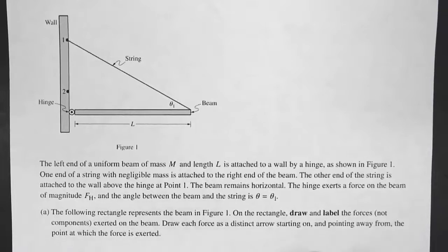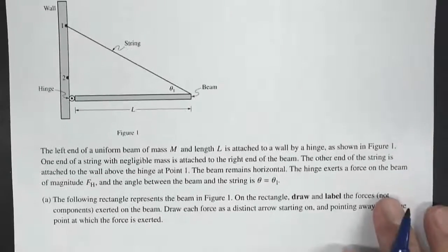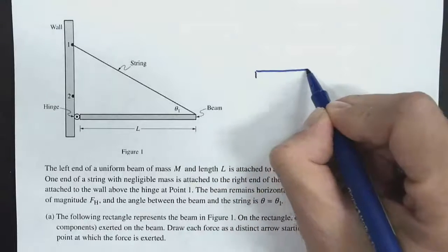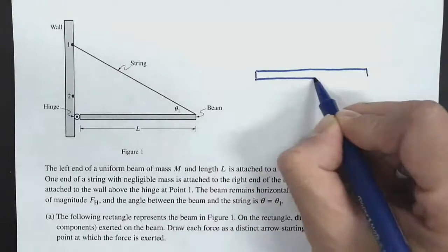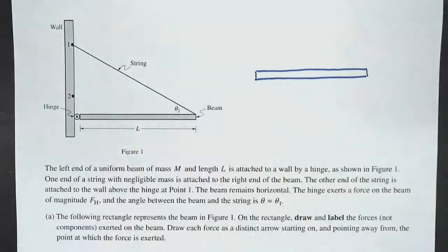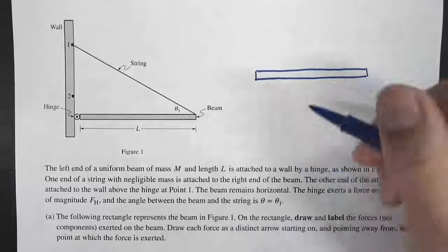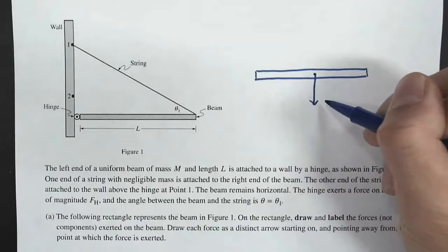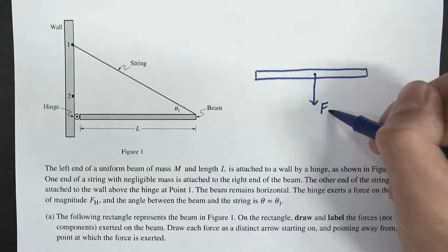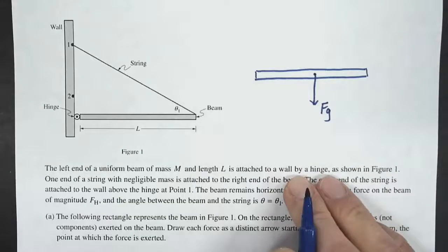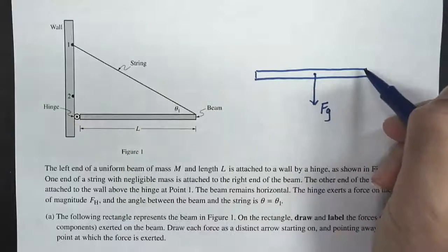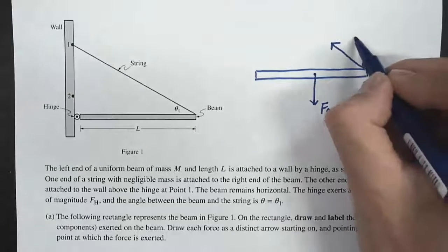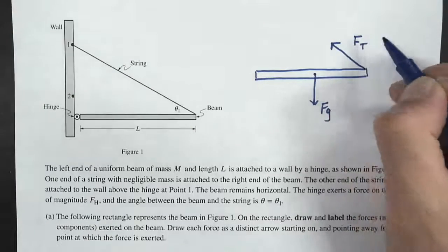So we have this beam, and I'm going to draw it up here so you can see. Here's our beam, and we're going to draw all the forces acting on it. I like to always start with gravitational force, because we know there's gravitational force on all objects on Earth — that's going to be pointed straight down. I also know there's a string, so there's going to be a force along the direction of the string, and that's going to be Ft.